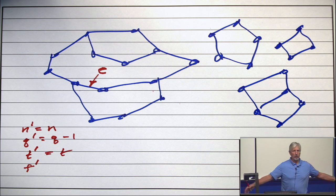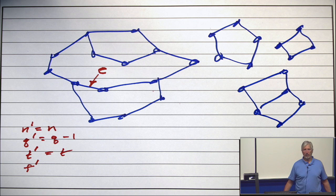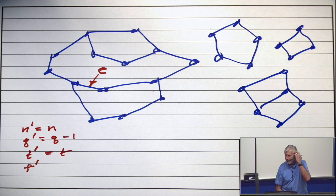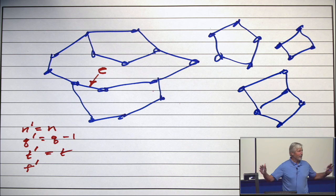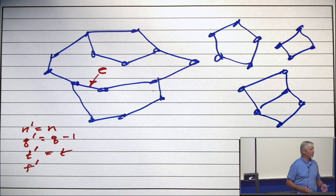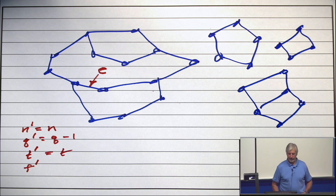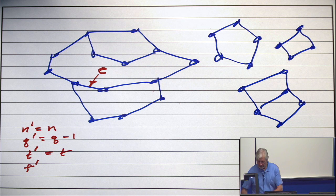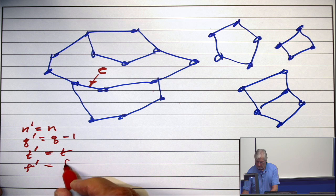But when you have a bridge, the water is going underneath it already. And it's the same. When you take that bridge away, you don't co-mingle the water. So, F prime is F minus 1.